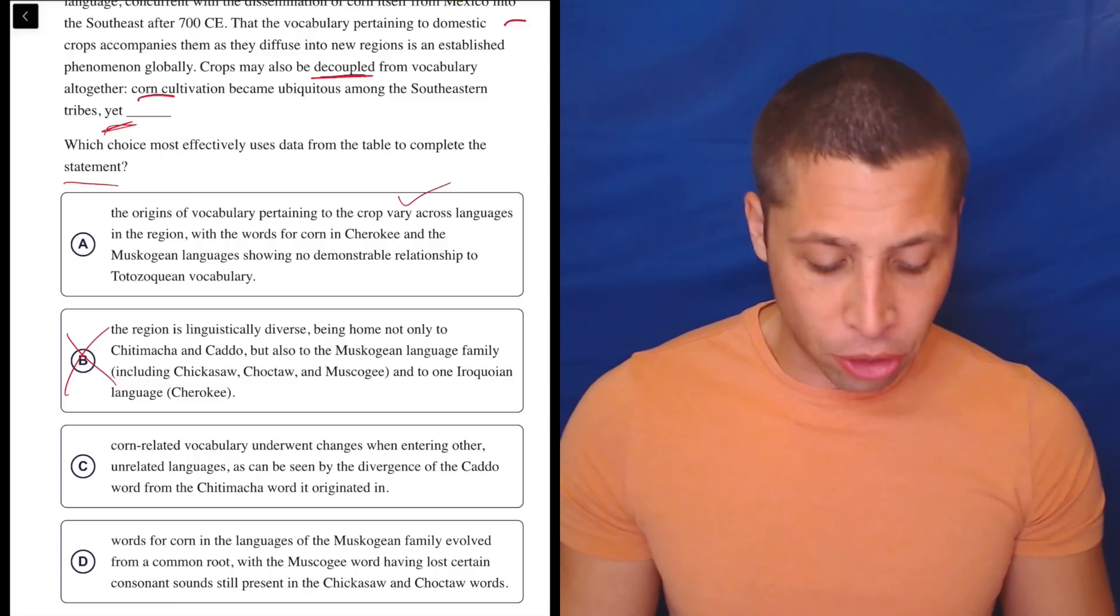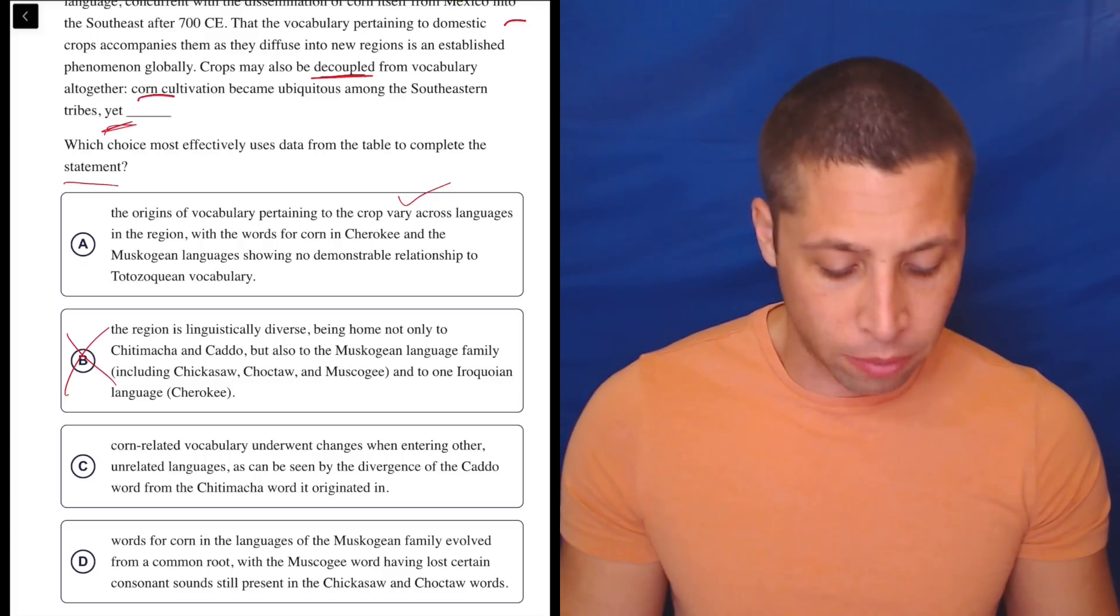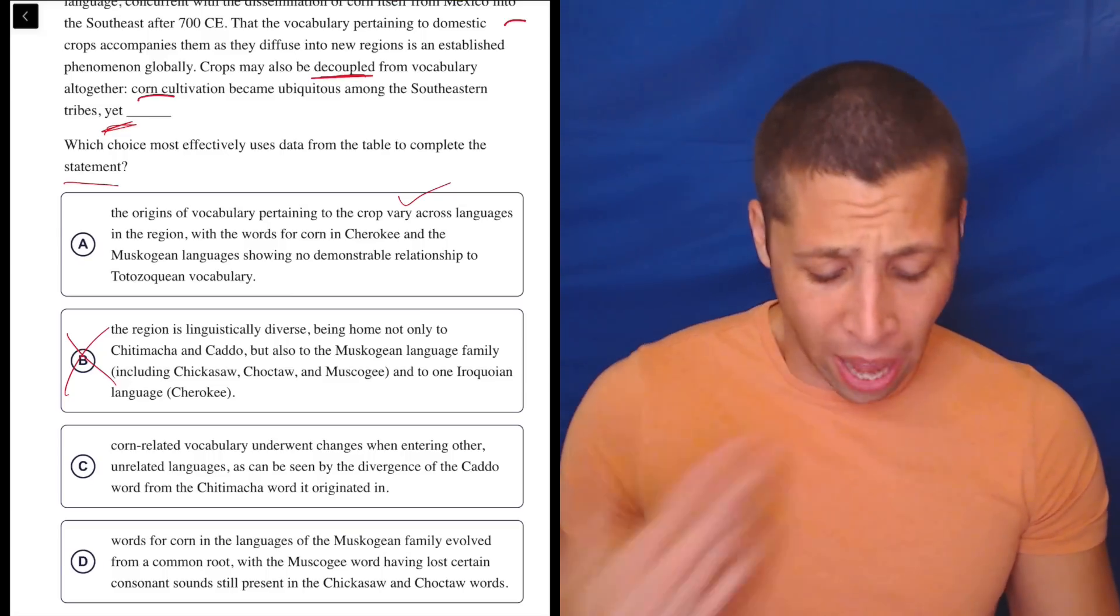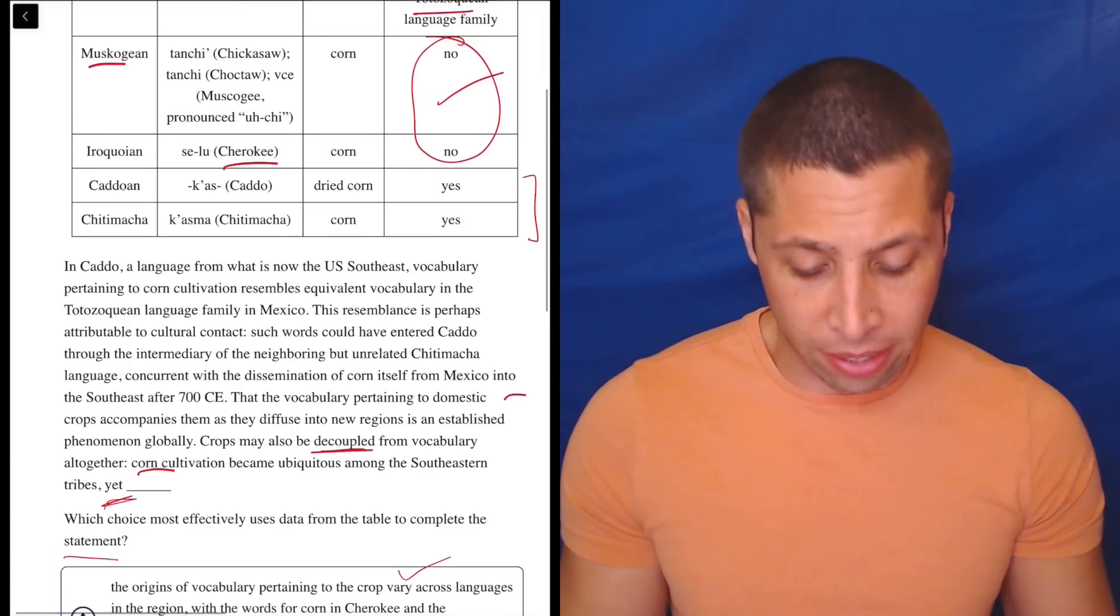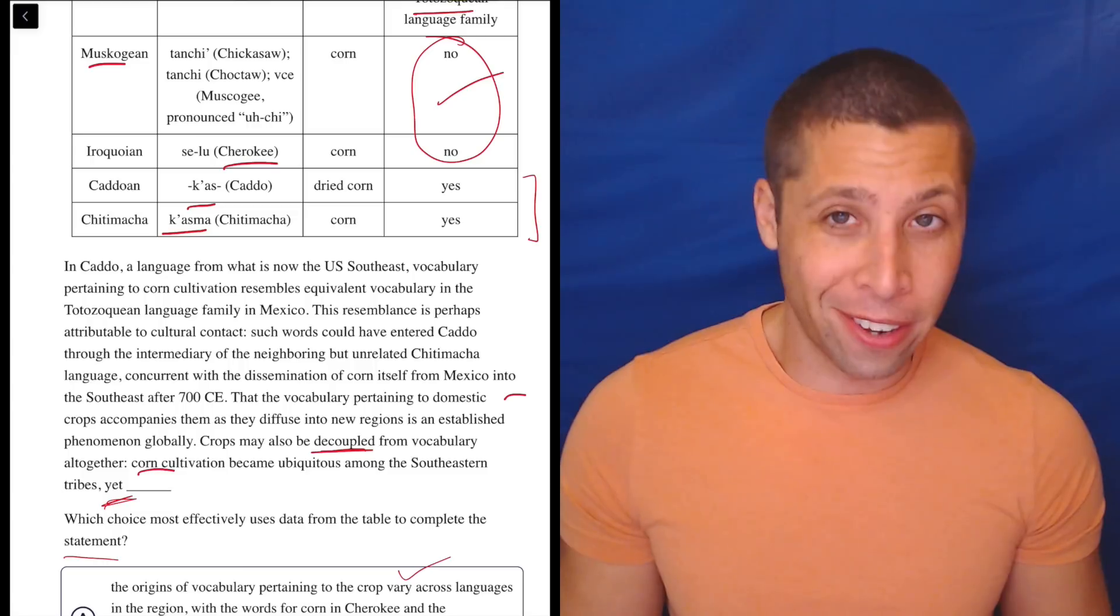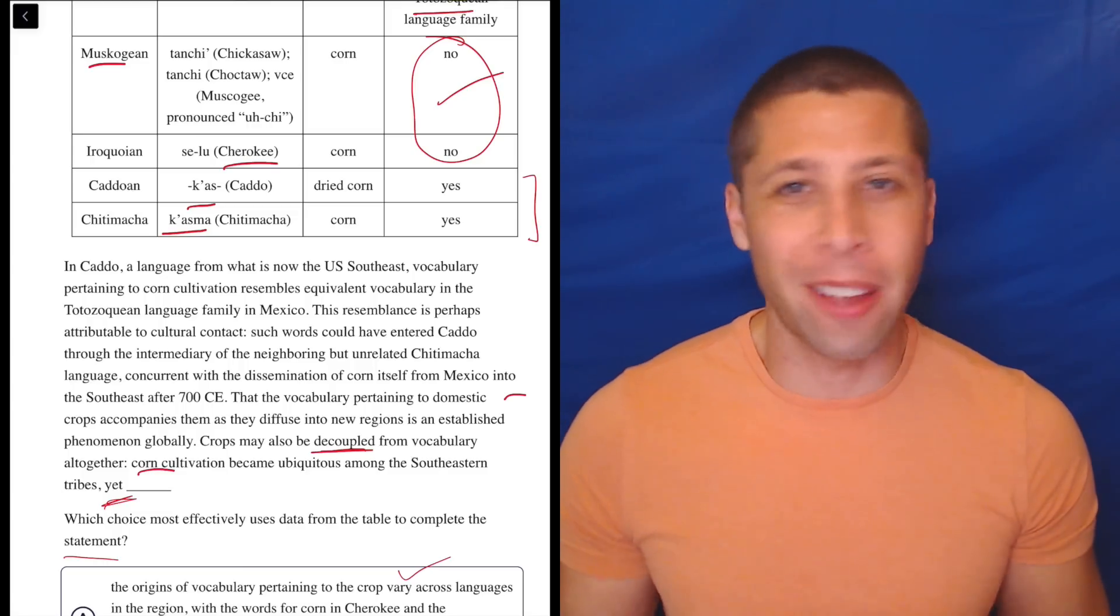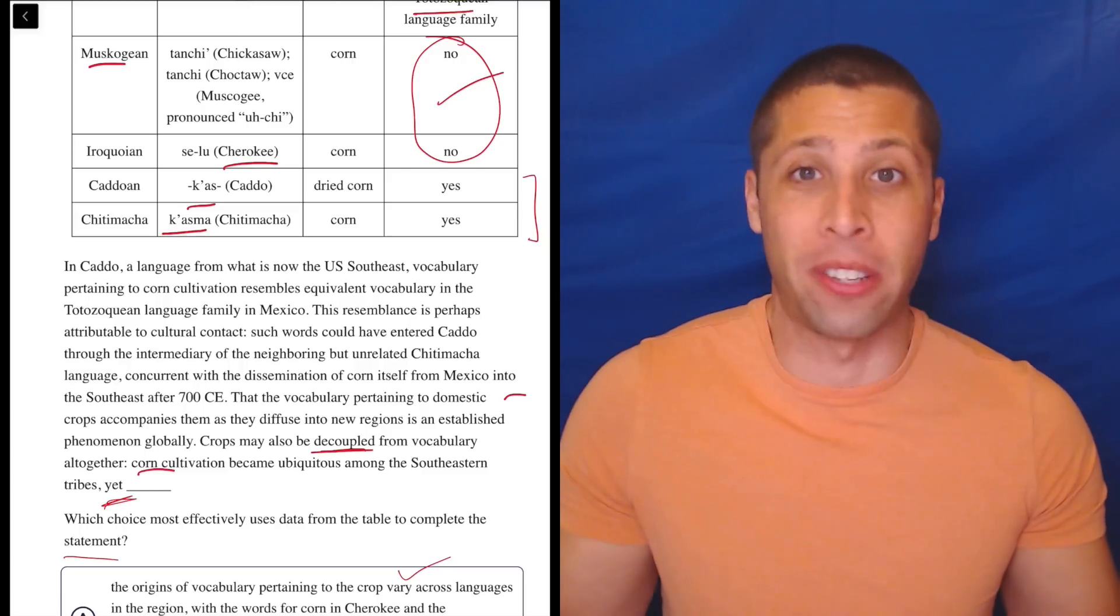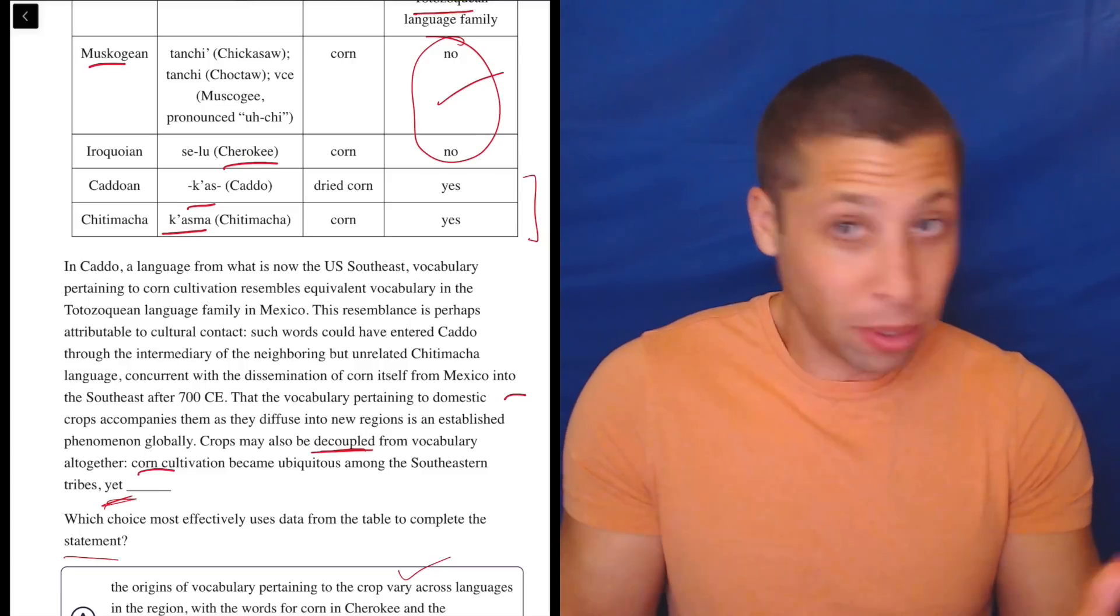C. Corn-related vocabulary underwent changes when entering other unrelated languages, as can be seen by the divergence of the Kato word from the Chitimacha word it originated in. Well, here's a great example of maybe something that's true. Like, I don't know that it underwent changes. I guess it's two different words. I'm not even really looking at this column, though. They're not talking about their specific pronunciations. I'm not an expert on this, so I don't even know how to say those things. For all I know, it is the same pronunciation. So I don't even know what that means.